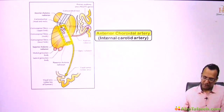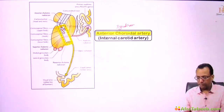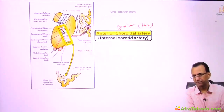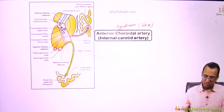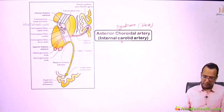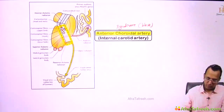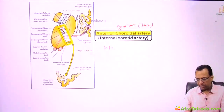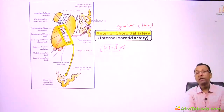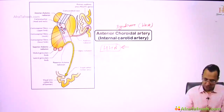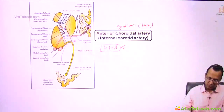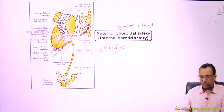In anterior choroidal artery syndrome, the clinical features include visual problems — specifically homonymous hemianopia — because the visual pathway is involved. There are also auditory problems and sensory motor problems, but not on the face.